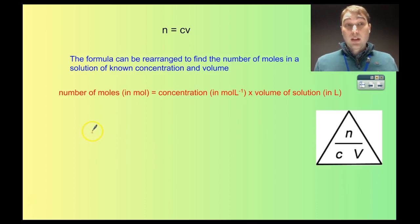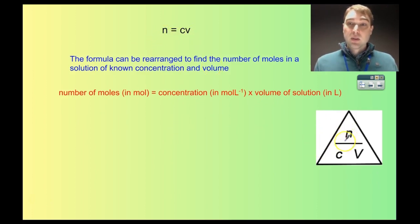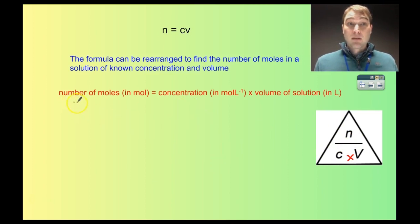We can rearrange the equation to find the number of moles in a particular solution if we know the concentration and the volume. Rearranging gives us N equals C times V. If we look at our magical triangle, N equals C times V. So the number of moles is equal to the concentration in moles per litre multiplied by the volume of solution.